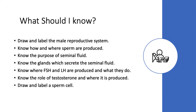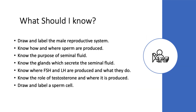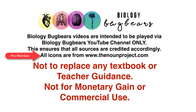At the end of this video you should be able to: draw and label the male reproductive system; know how and where sperm are produced; know the purpose of seminal fluid; know the glands which secrete seminal fluid; know where FSH and LH are produced, where they go and what they do; know the role of testosterone and where it's produced; define secondary sexual characteristics and give examples; and draw and label a sperm. Best of luck with the revision — check out the exam papers, there are quite a few questions you could answer even at this stage.